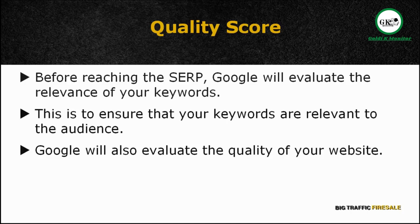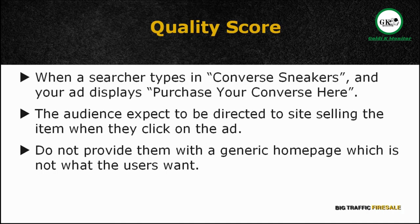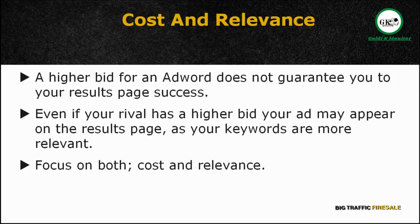The next factor is the quality score. Before your keywords can reach the results page, Google will evaluate the relevance and usefulness of your selected keywords. Google also looks into the quality of your website. For example, if the user types in 'Converse sneakers' and your advert is 'Purchase your Converse here,' once they click your ad, they would expect to be directly led to a website selling Converse sneakers — not a generic homepage. A higher bid for an AdWord does not necessarily guarantee results page display success. Even if your rival's bid is higher, you may appear above their ad because your quality score is better. Higher quality score means lower CPC, so focus on both cost and relevance.